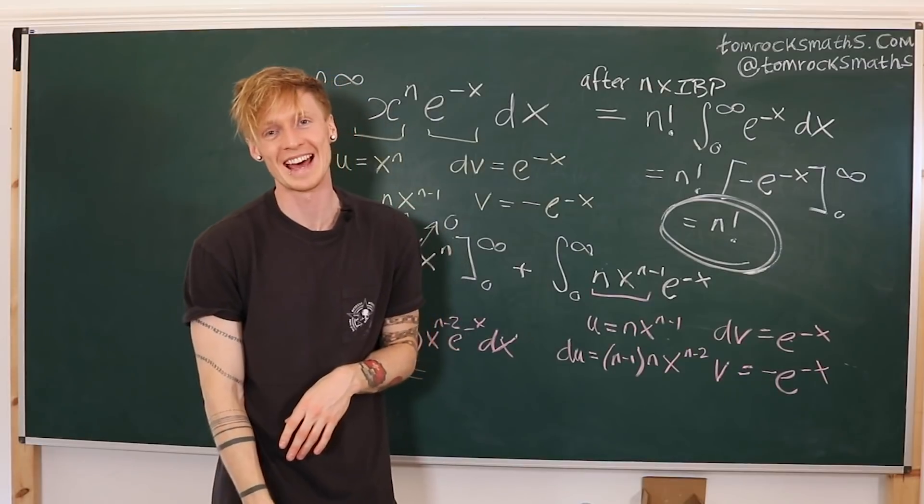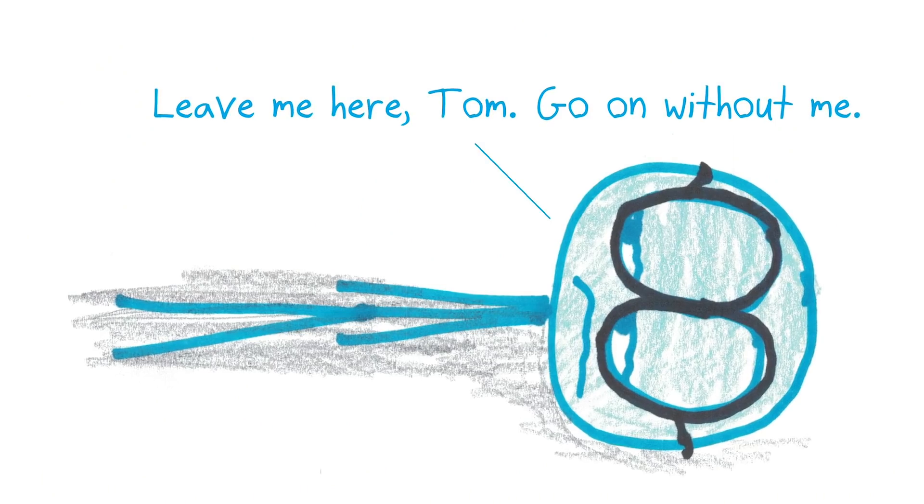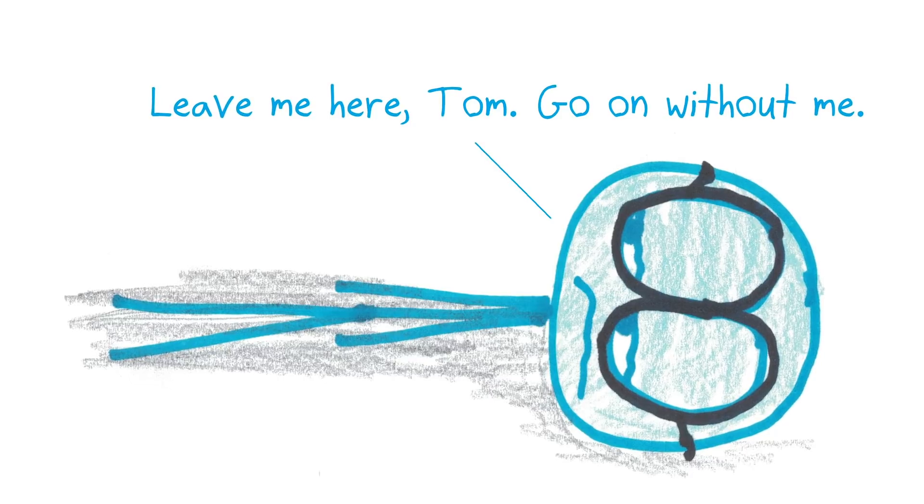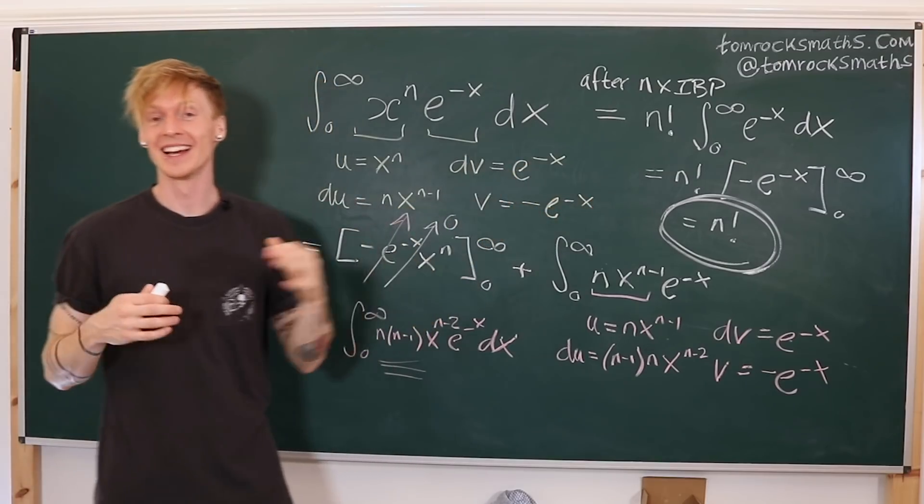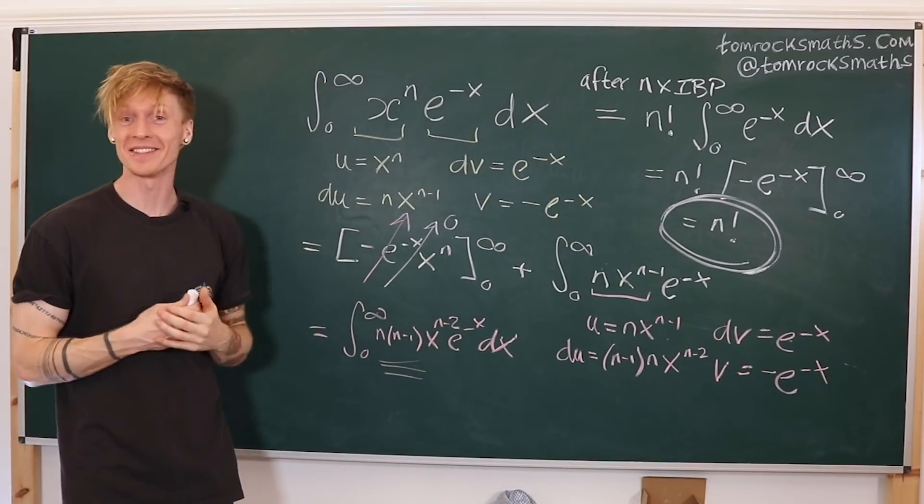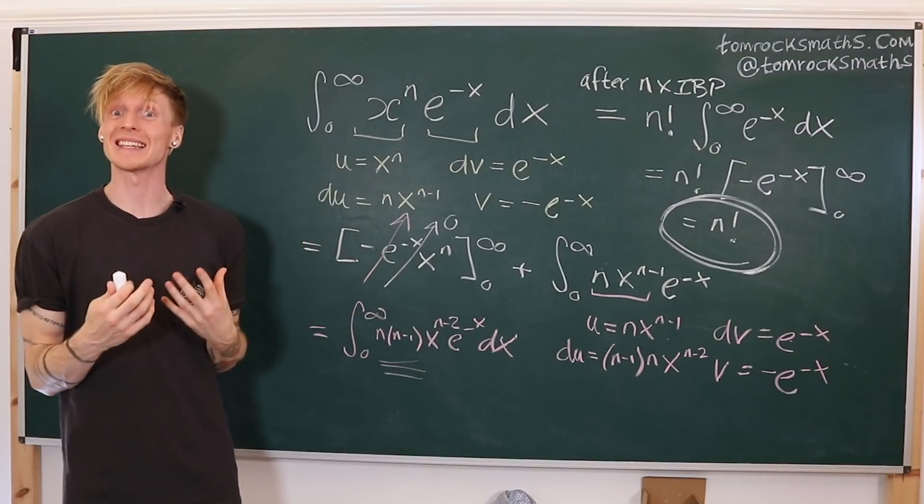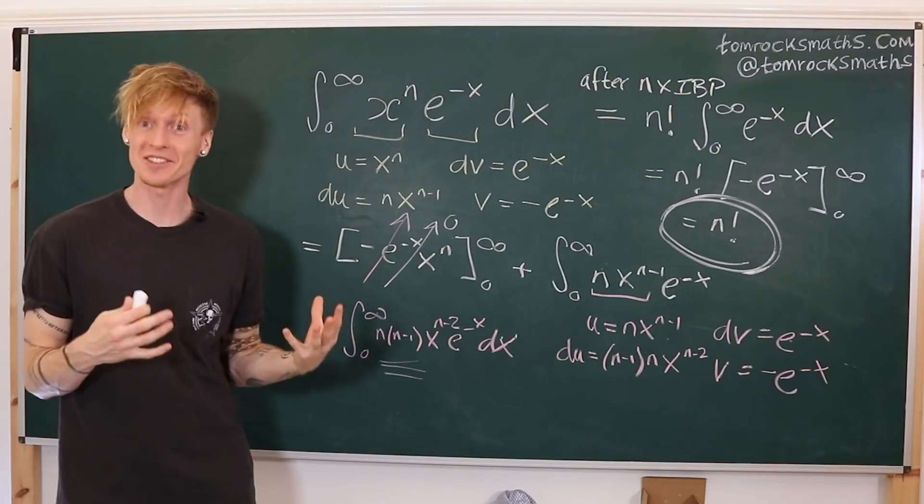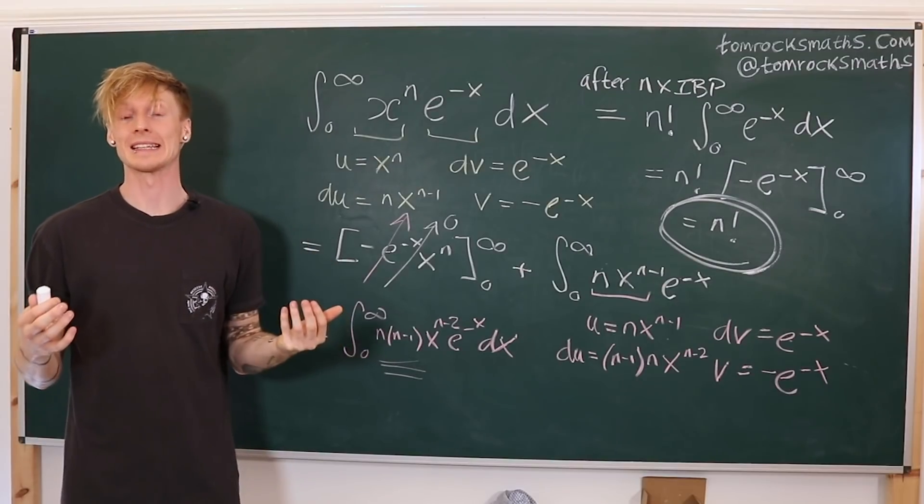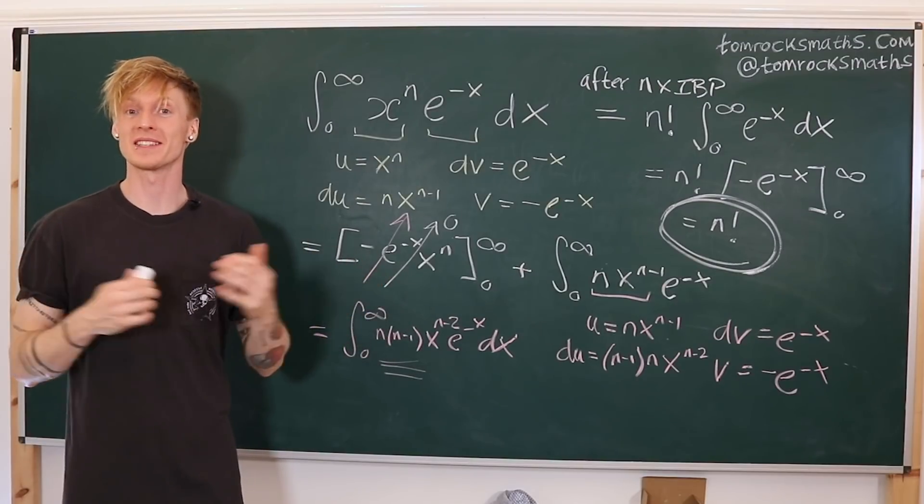Whew! That was a lot of work. So we got there. Sure, this is the right answer, n factorial. But that was, I think you'll agree, one hell of a slog. So this is where the magic of differentiation under the integral sign comes in. So, over to you, Mr. Feynman.